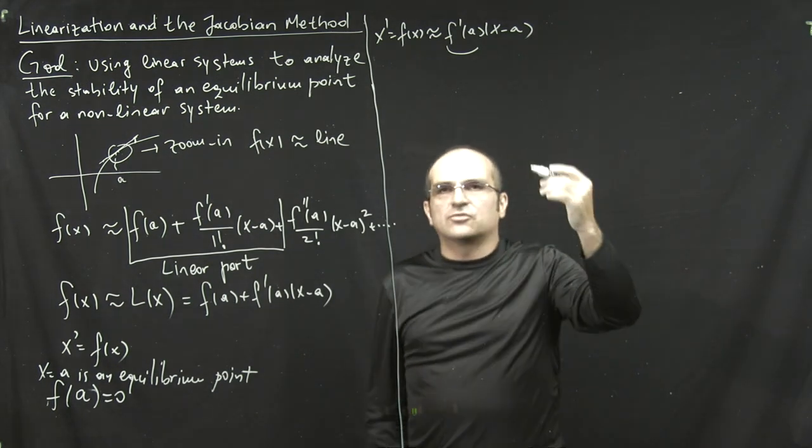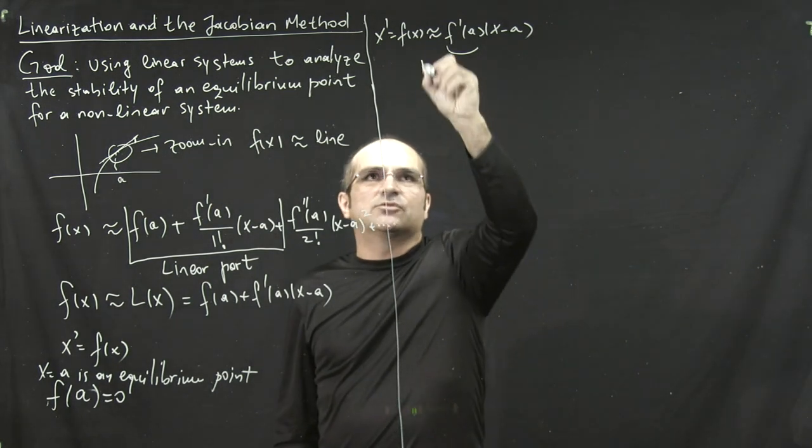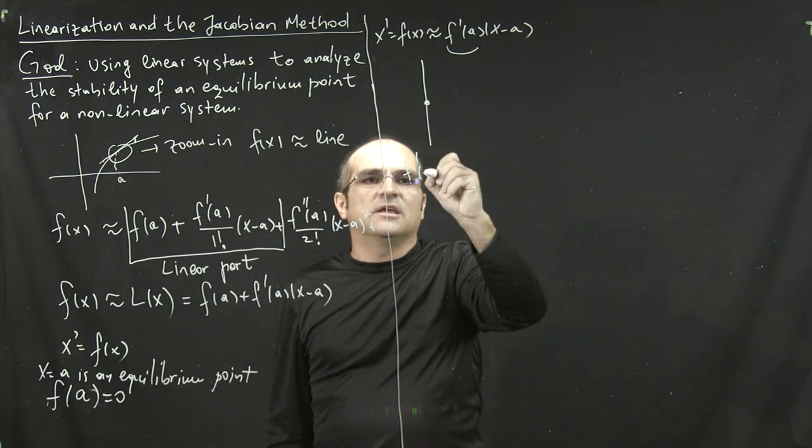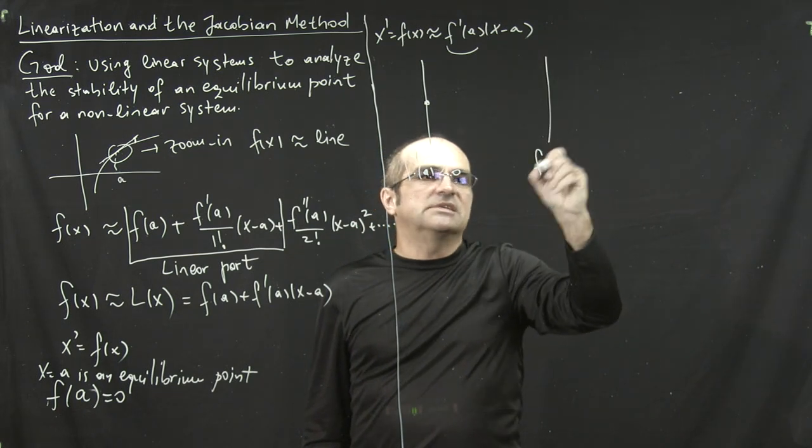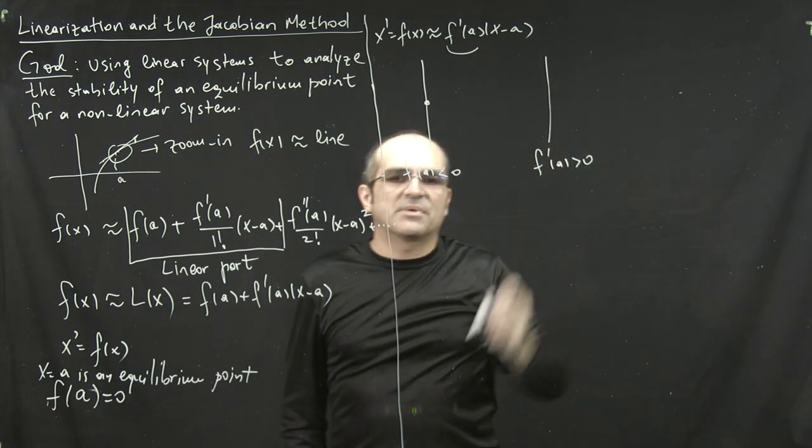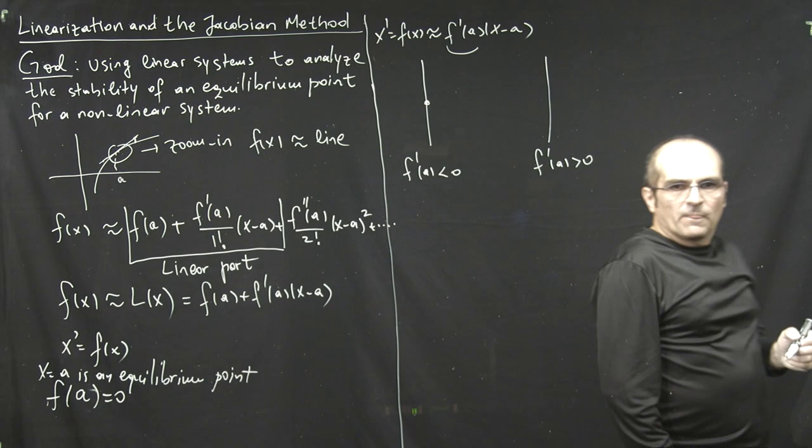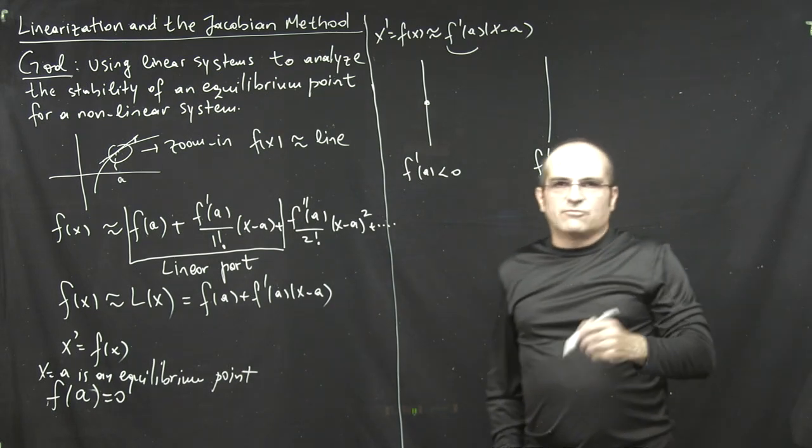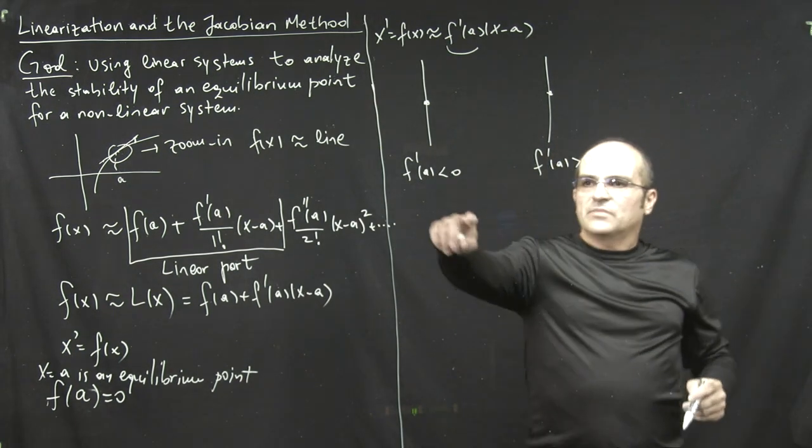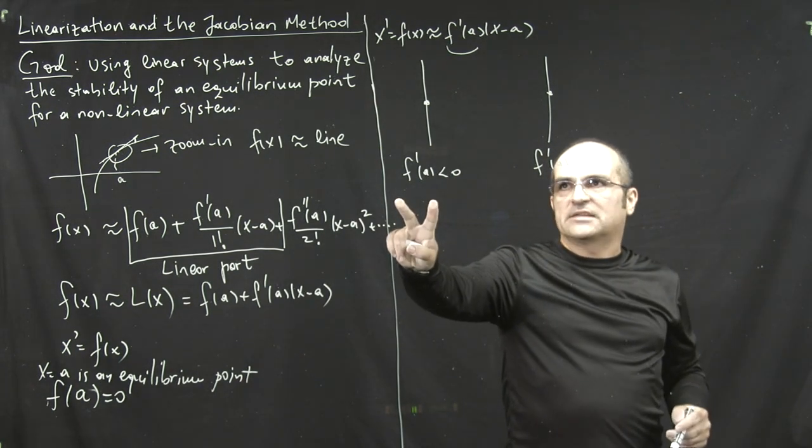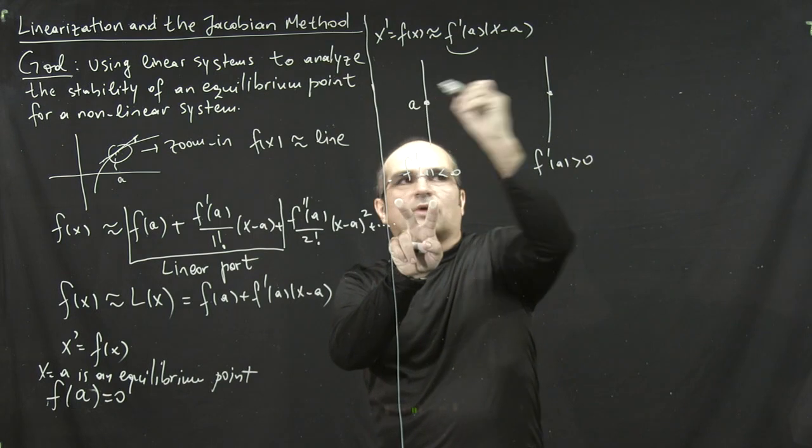So, let's go back to what we, and that's a nice opportunity to review, right, what we did in the beginning. Let's remember the phase line concept that we discussed earlier. What happens if f prime of a is positive or negative in terms of the sign of the derivative? So, keep in mind, if f prime is negative, then this is the equilibrium point, right, a.